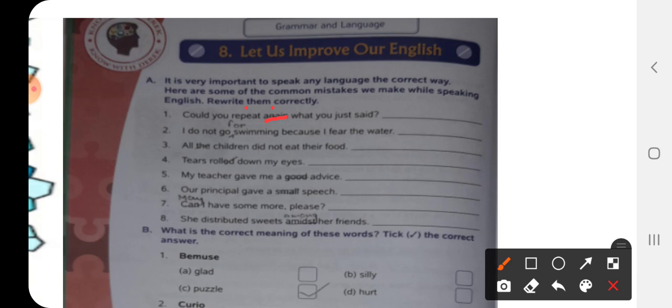Now number two children. I do not go swimming. I do not go swimming because I fear the water. It doesn't mean anything. So you have to add a word for what you are going, isn't it?